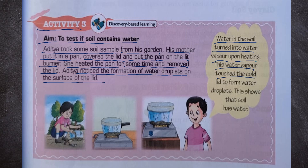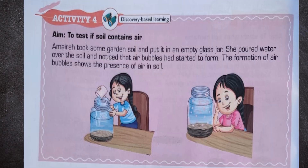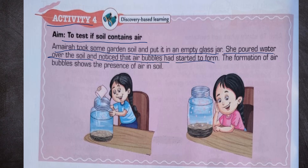Third activity — to test if soil contains air: Amaira took some garden soil and put it in an empty glass jar. She poured water over the soil and noticed that air bubbles had started to form. The formation of air bubbles shows the presence of air in soil.